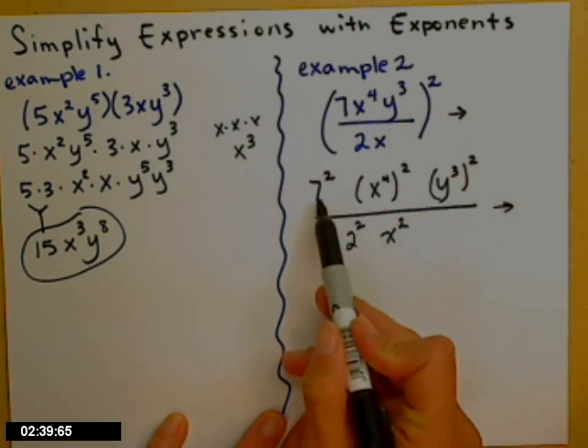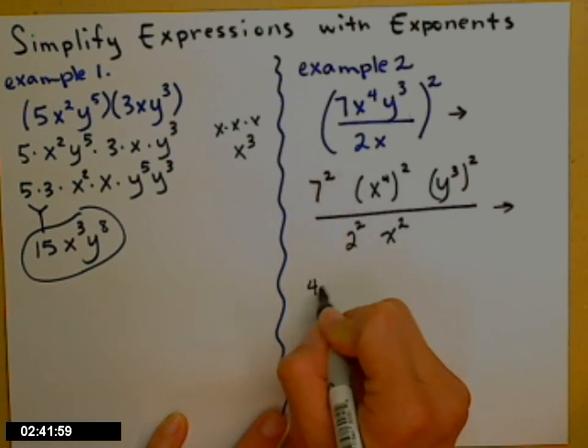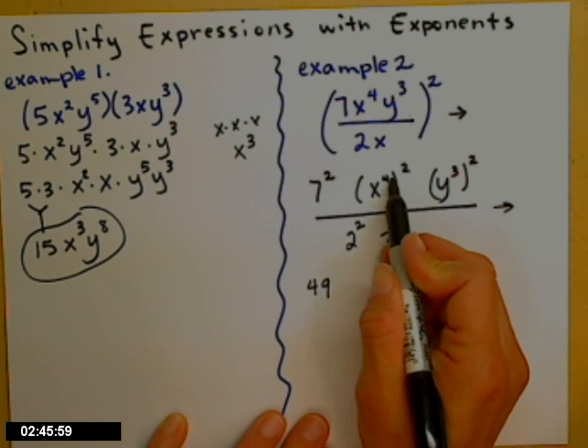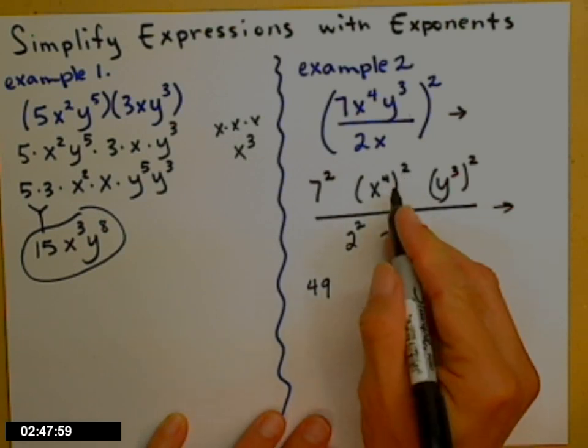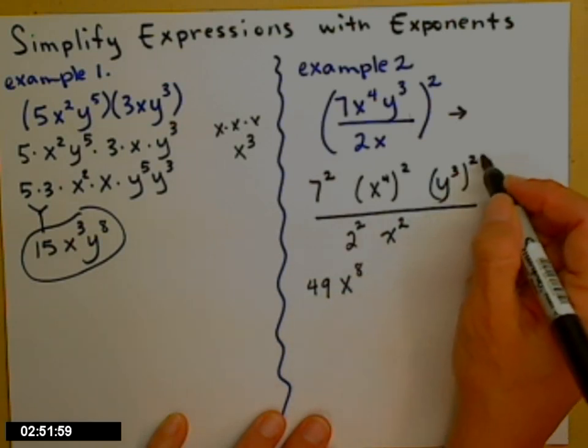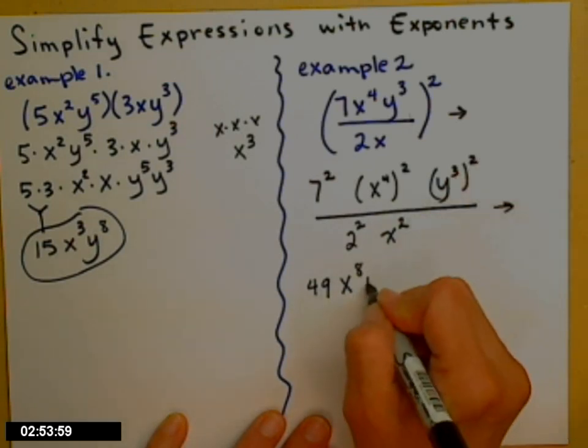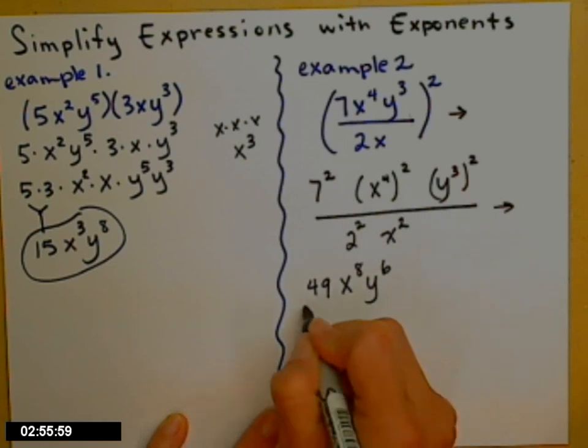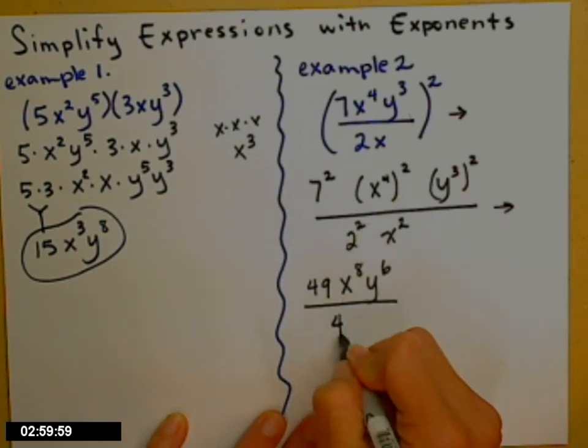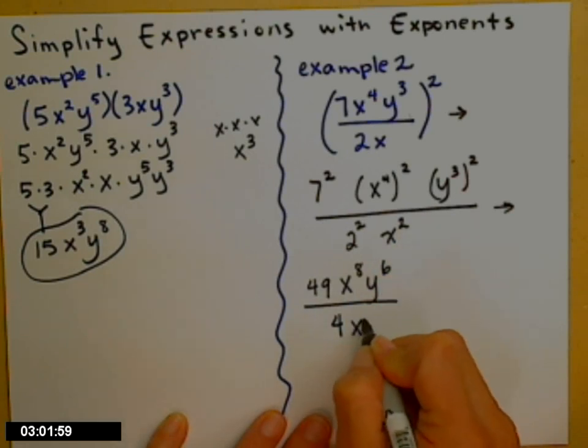Okay, so let's go ahead and take care of those. So 7 squared is 49. x to the 4th squared, powers to powers. What you do is you multiply those, so 4 times 2 is x to the 8th. y cubed squared, powers to powers, y to the 6th, divided by 2 squared is 4, and then x squared is just x squared.